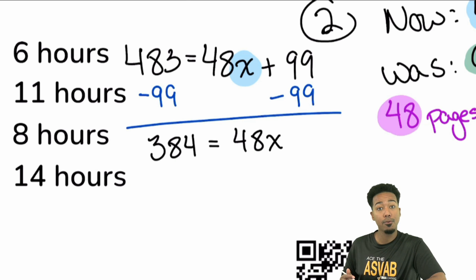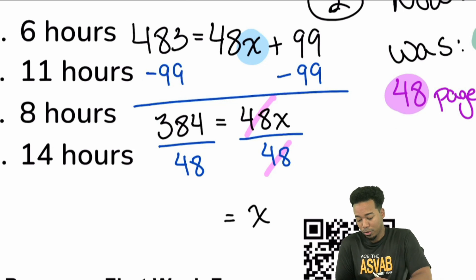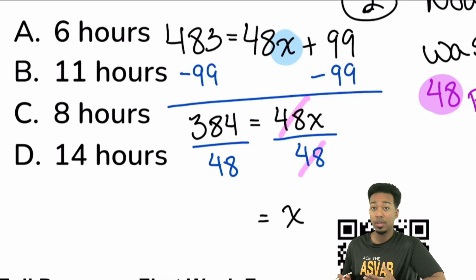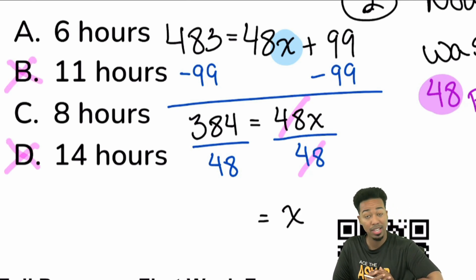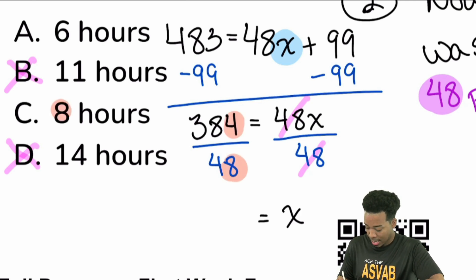Now what we're going to do next is divide both sides by 48 and then we're done. Divide by 48, divide by 48. That's going to cancel out on the right side, leaving us with x by itself on the right. Whatever 384 divided by 48 is, that's going to be our answer. At this point, you can quickly look at the answer choices to see if you can guesstimate what 384 divided by 48 might be. I can take a look at this right now and say B and D are absolutely not going to be the answers because 48 times 10 is 480. So 11 would be way higher than that. 14 would be even higher than that. It's going to be between six and eight, and I can definitely say that eight is closer.